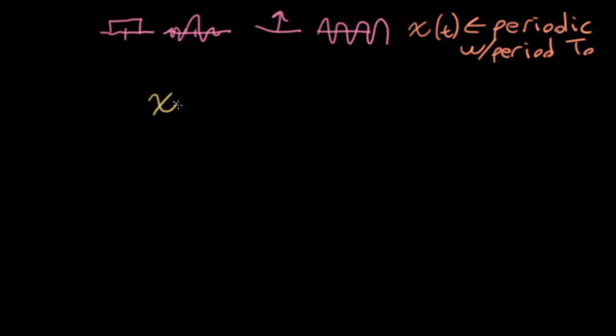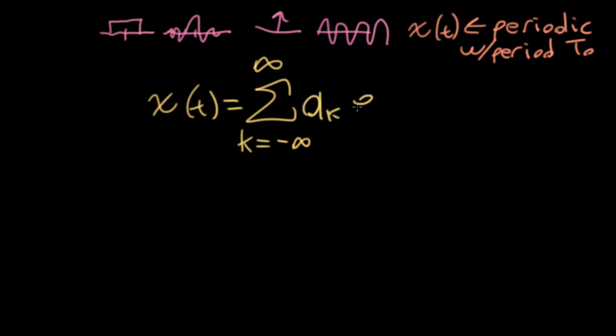We've already looked at frequency domain representations of periodic signals and discovered that we could write these as a Fourier series. So here I'm going to write this as a set of Fourier series coefficients a_k times e to the j omega naught kt. And the omega naught here could be written as 2 pi over t naught.